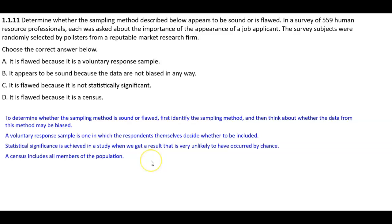Again, to determine whether the sampling method is sound or flawed, you want to first identify the sampling method that was given, and then think about whether the data from this method may be biased.